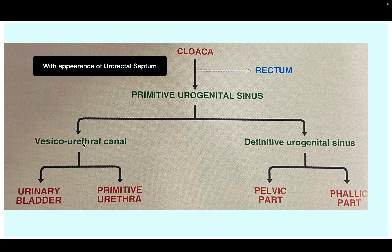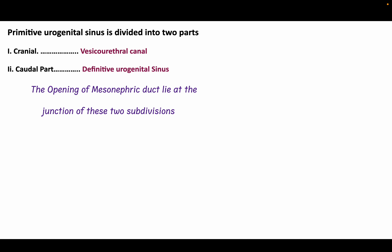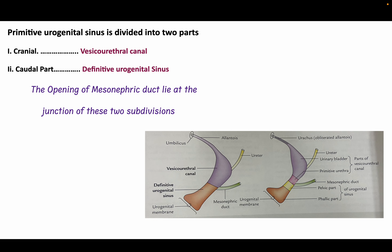The primitive urogenital sinus is divided into two portions: the vesicourethral canal and the definitive urogenital sinus. The fate of the vesicourethral canal is the urinary bladder and primitive urethra. The definitive urogenital sinus is further divided into pelvic and phallic parts, which also contribute to the urethra. The initial portion of the urethra arises from the vesicourethral canal.